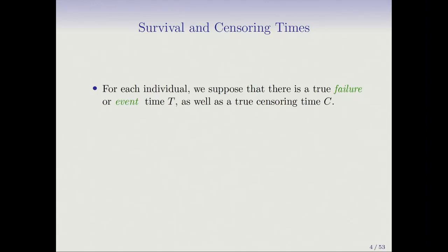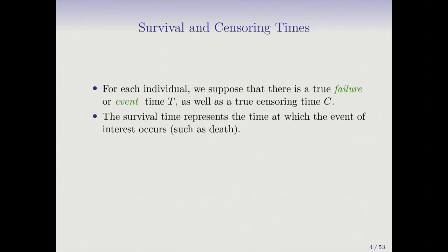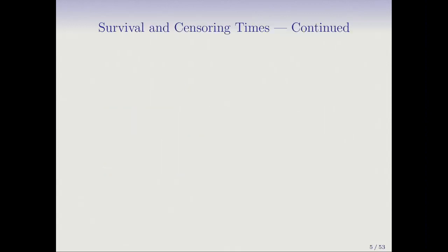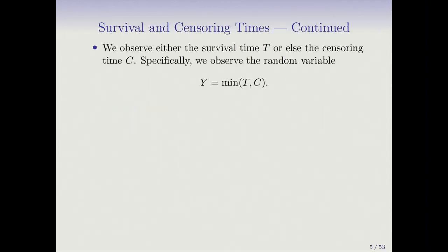For each individual, we suppose there's a true failure or event time T — called failure if the event is a part failing, someone dying, or some other event. There's also a true censoring time C for that individual. The survival time T represents the time at which the event of interest occurs, such as death, while C is the censoring time — for example, if a patient drops out of the study or the study ends before the event occurs.